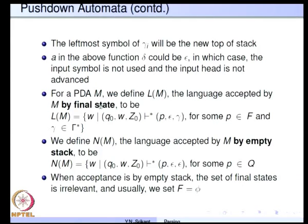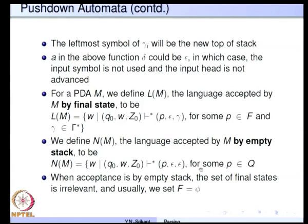For acceptance by final state, the machine must start from the start state, move to some final state, and empty the input — the stack does not matter. For acceptance by empty stack, it starts from the start state, moves to some state, and empties both the input and the stack. The state to which it moves is not important, so sometimes we set F equal to phi for this type of automaton.